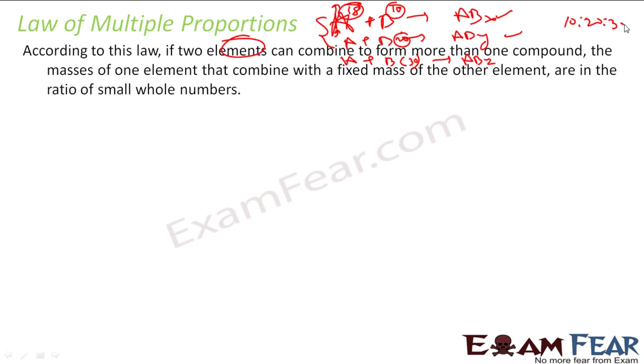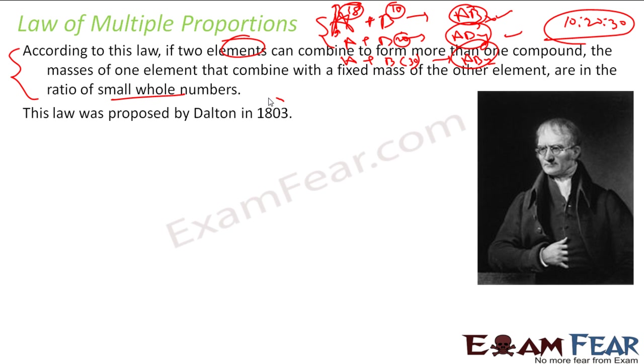Laws of multiple proportion. So you keep one guy fixed and you vary another guy to form different products. You will find that the ratio is always in whole numbers actually. And this guy is called law of multiple proportion. This was given by Dalton in 1803. And for this also he had a lot of experiments and he found this law.